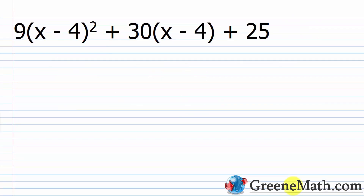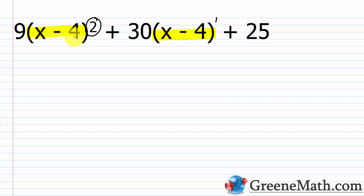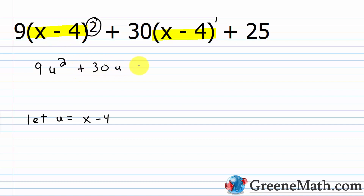Let's look at another one: 9 times the quantity x minus 4 squared, plus 30 times the quantity x minus 4, plus 25. This is another opportunity for substitution. Notice x minus 4 is squared here and raised to the first power there. So if I let u equal x minus 4, I can factor: 9u squared plus 30u plus 25.